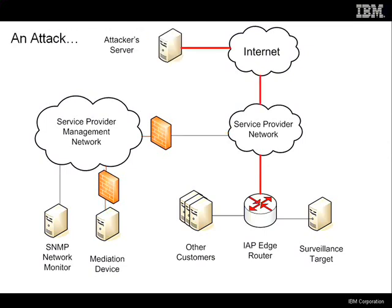This is the attack being proposed: an attacker out on the internet sends an intercept request to the router, and the router sends the content he asked for back over the internet to the attacker. This is an idealistic situation and a more realistic network map will follow.